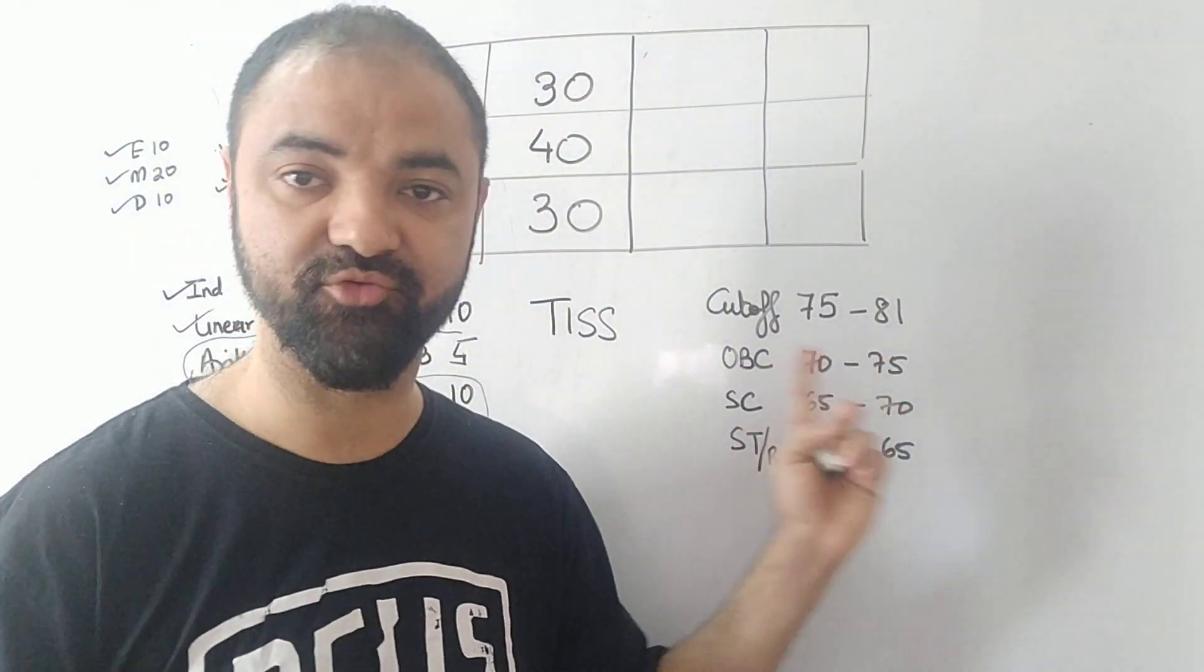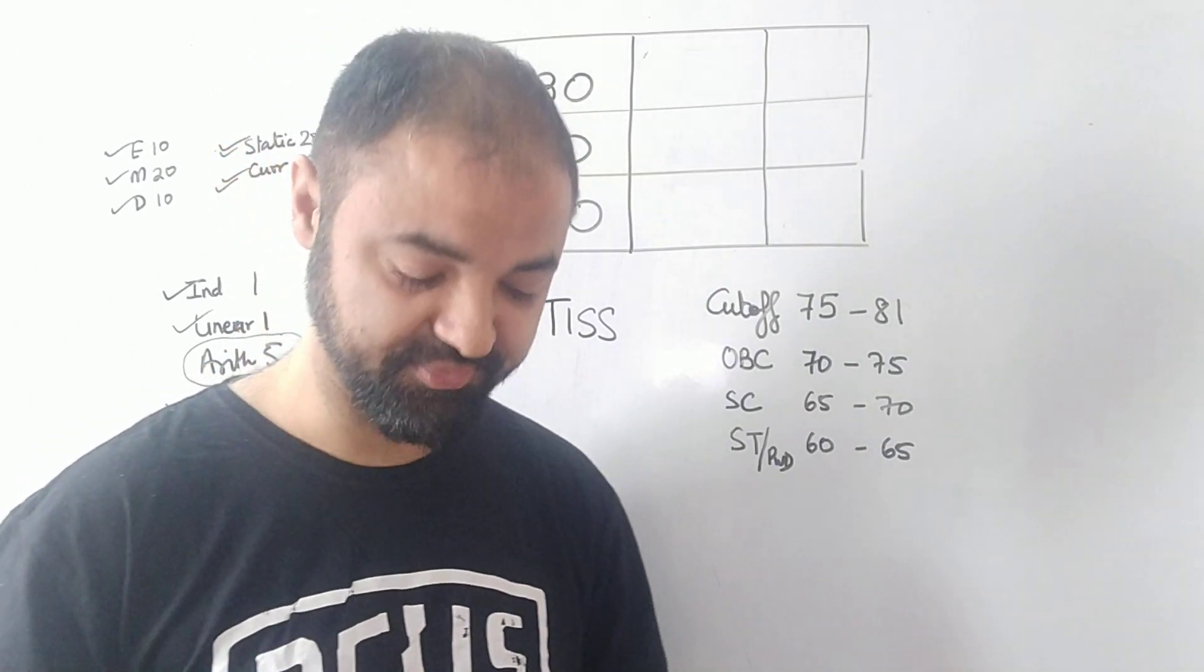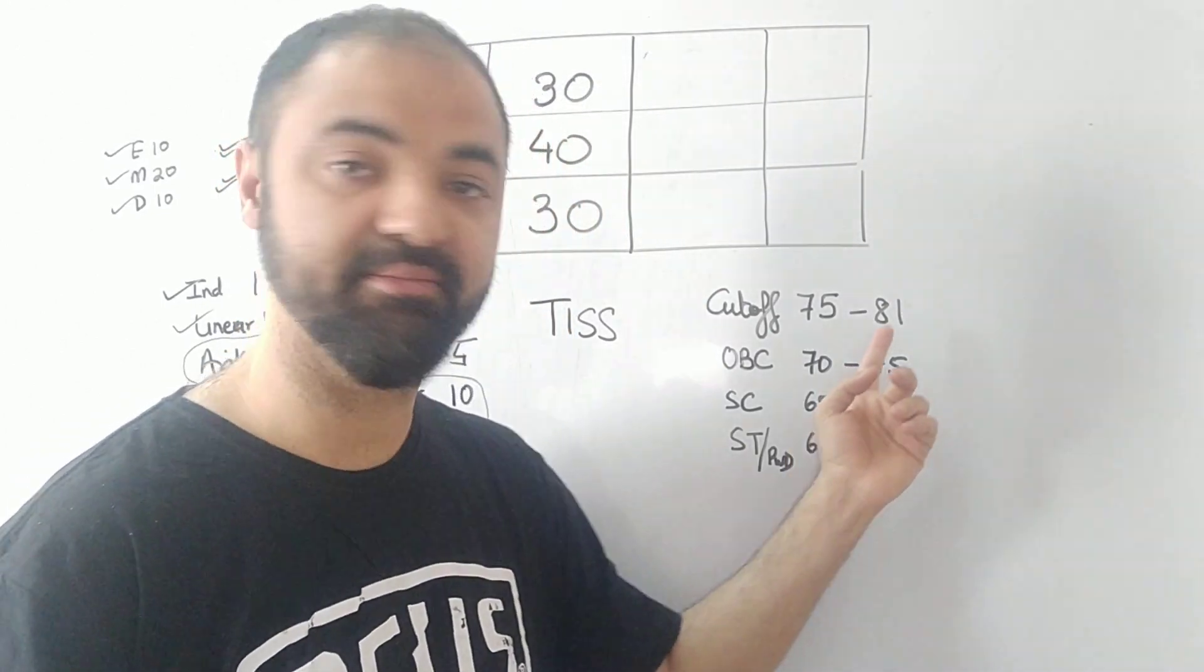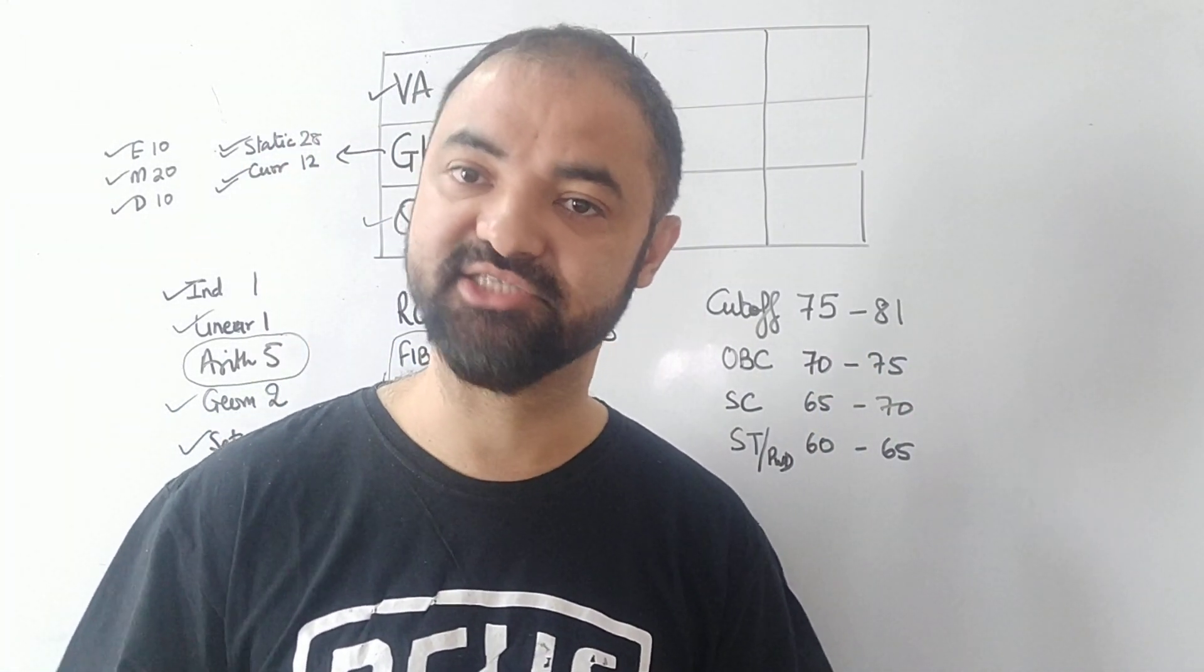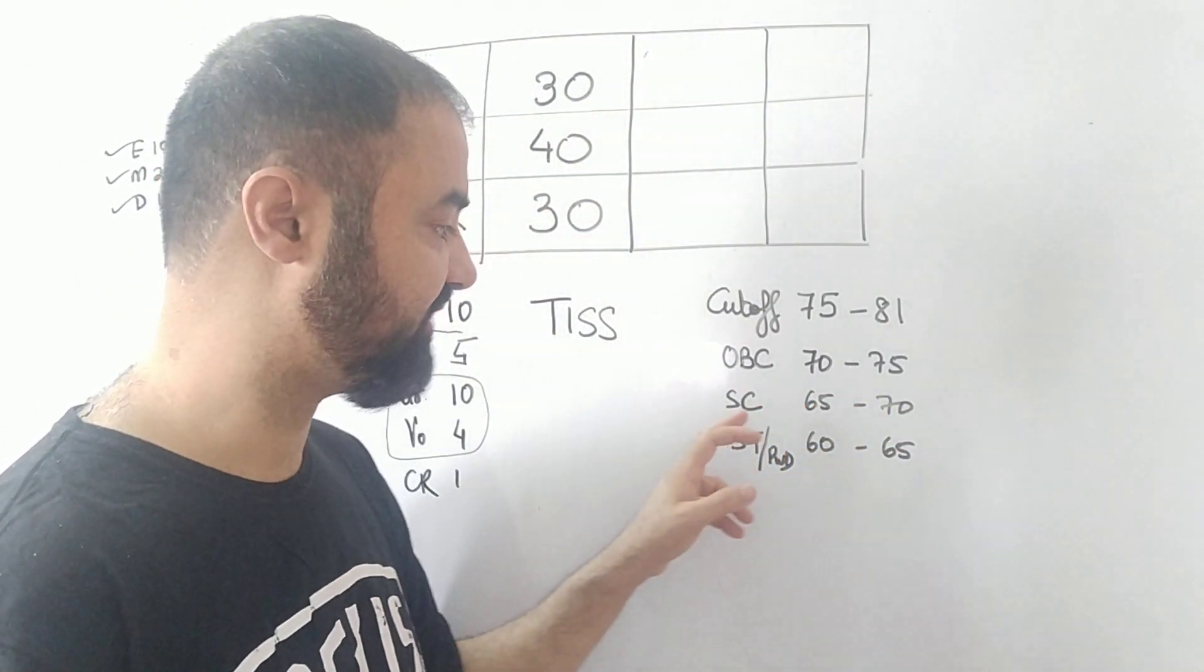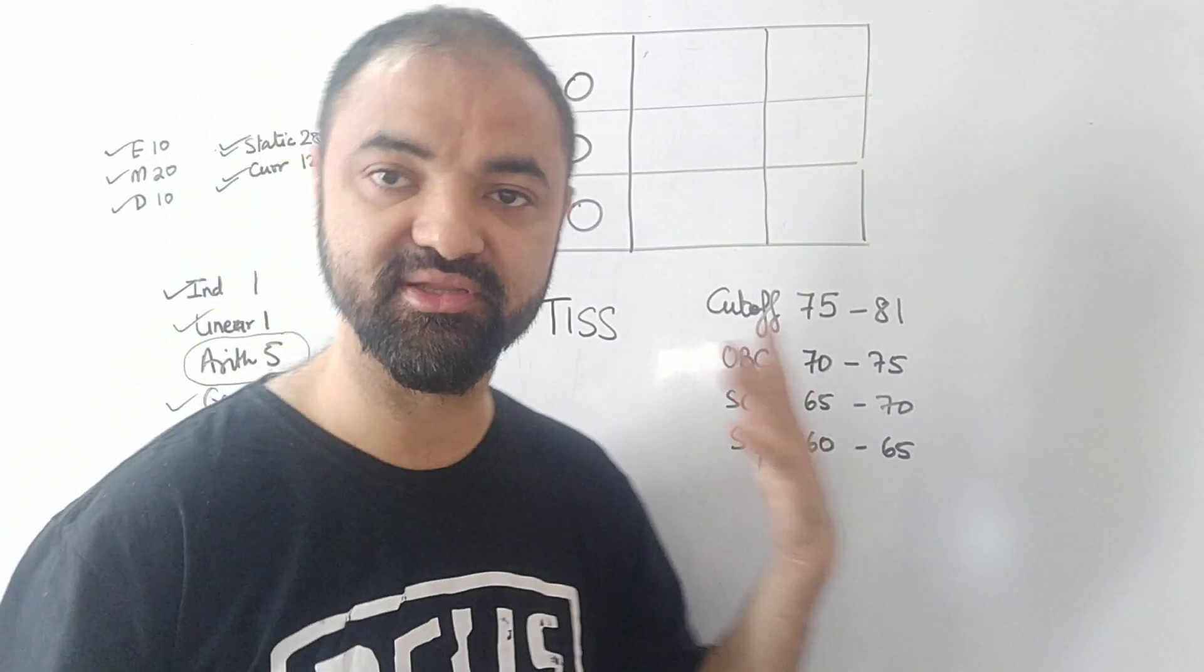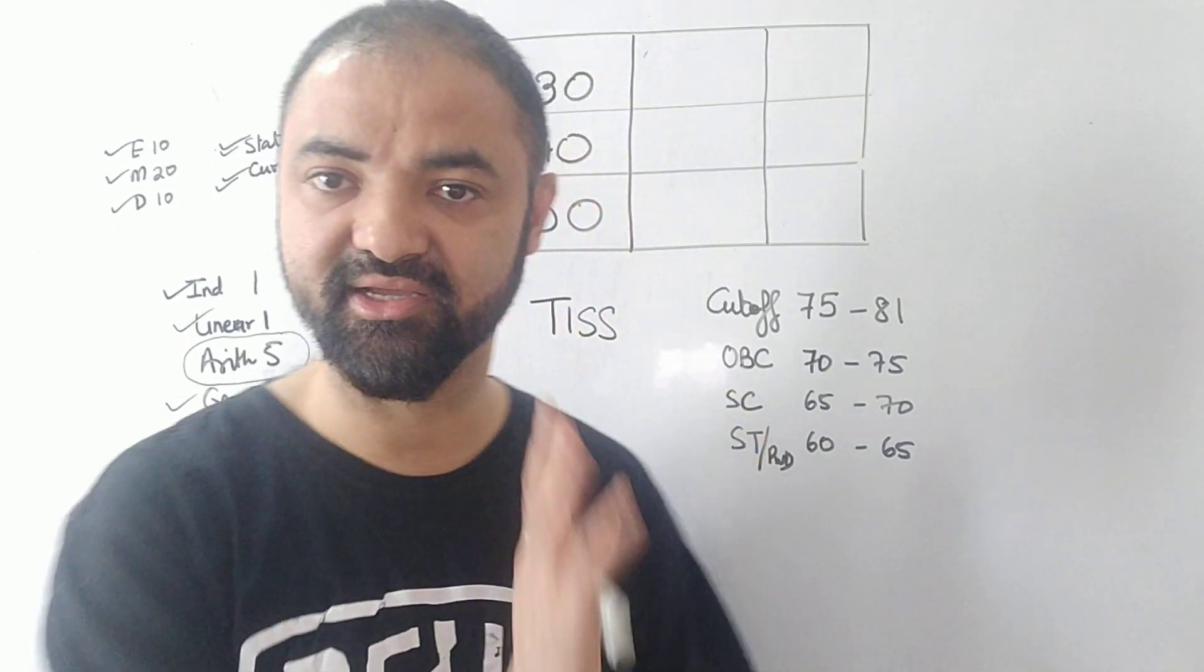From the cutoff point of view, cutoff will be around 75 to 81 depending upon this range. For example, last to last year cutoff was 81 because paper was easy. Last year cutoff came down to 75 because GK was tough. At the end of the day, everything is decided by the GK only, so if GK is good, you can easily crack the TISS exam. For OBC it's 70 to 75, for SC 65 to 70, and for PWD 60 to 65. That's the range. Again, we can't say if paper will be easy or tough, so as the paper comes, we can plan accordingly.